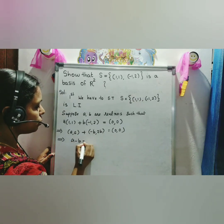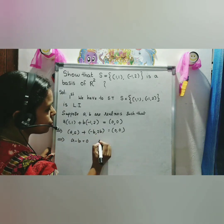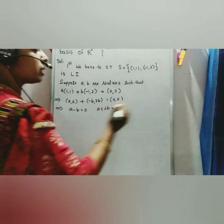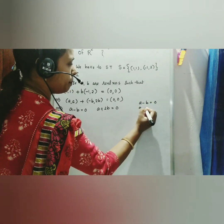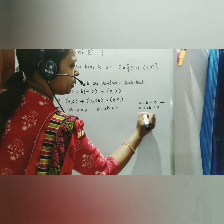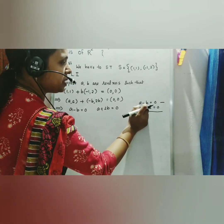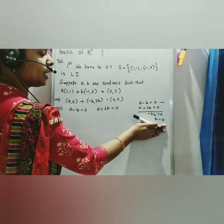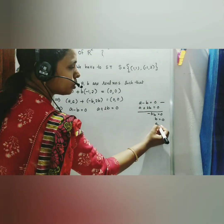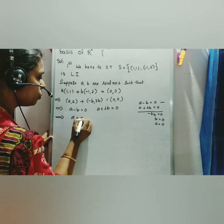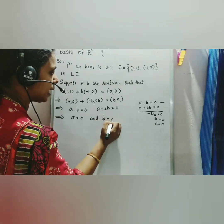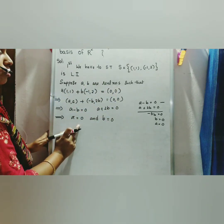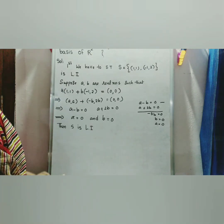A - B = 0 and A + 2B = 0. Solving these two equations by subtraction: (A - A) + (-B - 2B) = 0, giving -3B = 0, so B = 0. Substituting B = 0 into equation 1, we get A = 0. Since A = 0 and B = 0, the set S is linearly independent.